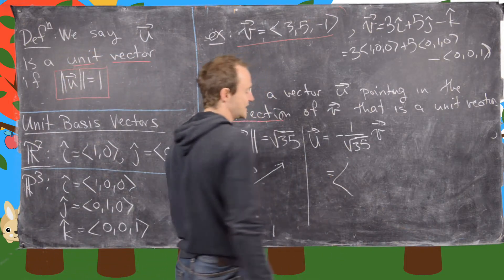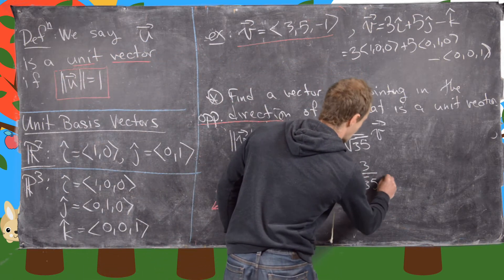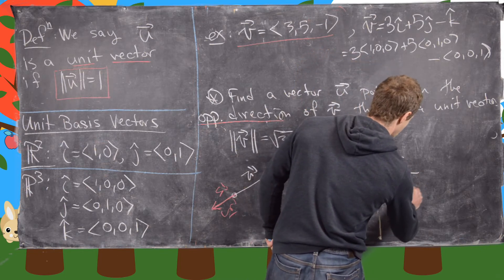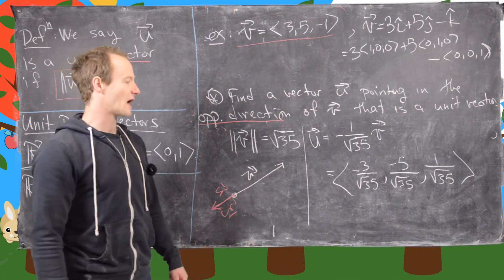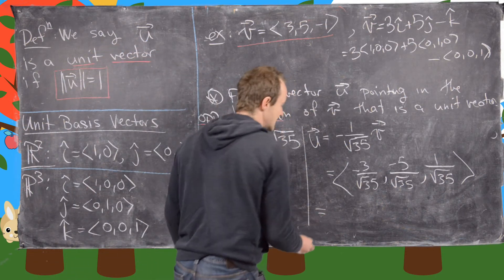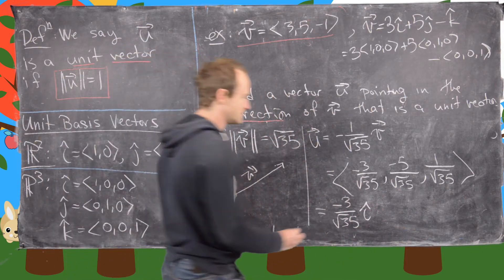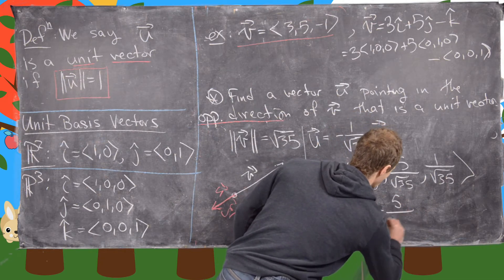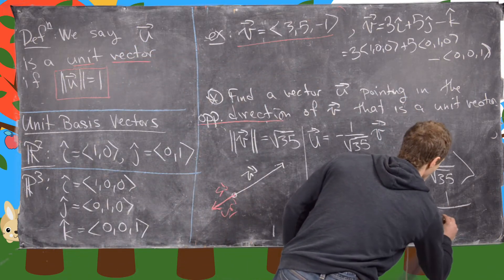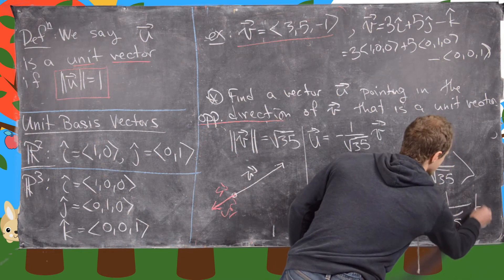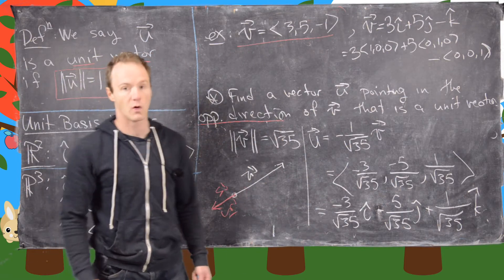We'll get something similar to before but with each component negated: u = (-3/√35, -5/√35, 1/√35). Writing this in i, j, k notation: that's (-3/√35)i + (-5/√35)j + (1/√35)k. Those are two representations of this vector. Let's clean up and look at one more example.